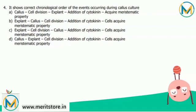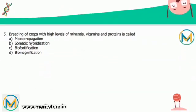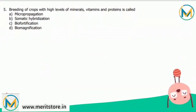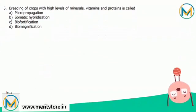The callus is then treated with cytokinin to acquire meristematic activity. The correct chronological order is: explant → cell division → callus → addition of cytokinin → cells acquire meristematic property. The correct answer for this question is option C.